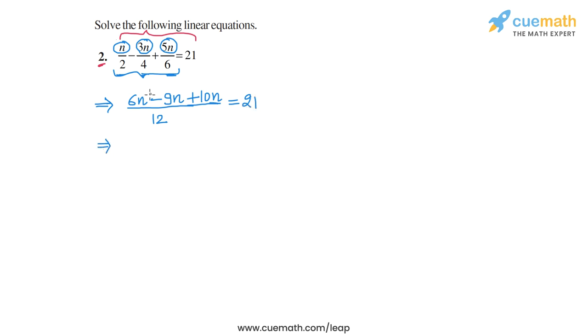Now let's simplify this further. So we have 6n minus 9n, that's minus 3n. And minus 3n plus 10n is 7n. So we get 7n in the numerator divided by 12, this is equal to 21.